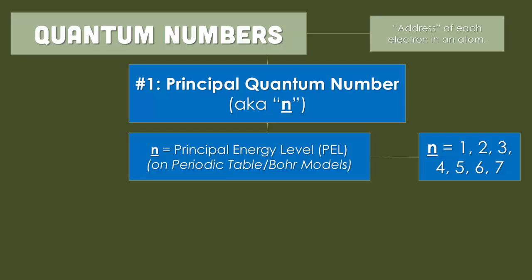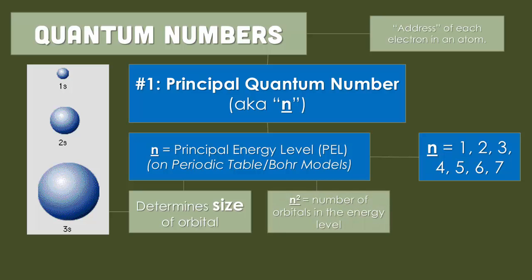Quantum numbers are like addresses of each electron in an atom. The first number is the principal quantum number, which we call n. This relates to the principal energy level, 1 through 7. They determine the size of the actual orbital needed, so n squared gives the number of orbitals in the energy level.